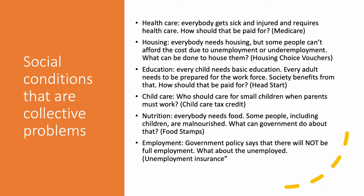In healthcare, we have Medicare, a government-sponsored program to provide health insurance for old people. We have the Affordable Care Act for everybody else — a regulation of the insurance industry to make health insurance more affordable and cover more things. For housing, we have housing choice vouchers and in some cases actual public housing units for people who can't afford housing. For education, we have public education — Chicago public schools, etc. Society benefits from people being educated as children and as adults.